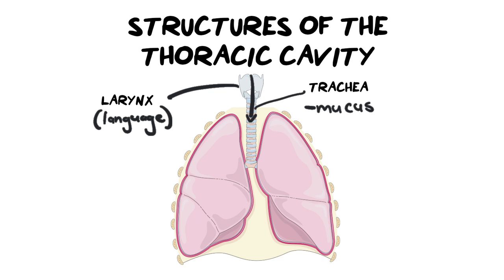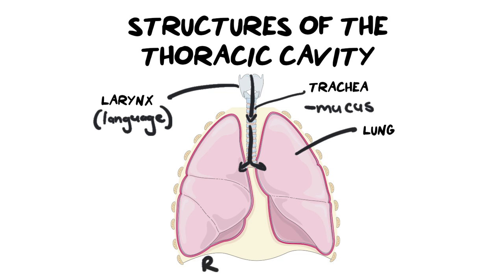As air moves down the trachea it branches off either to the left or right. The most obvious structures we see are the lungs — you have a left and a right lung, and they are slightly different sizes with different numbers of lobes. The right lung has three lobes, while the left lung only has two. The lobes are the sections or regions you can see in the diagram.